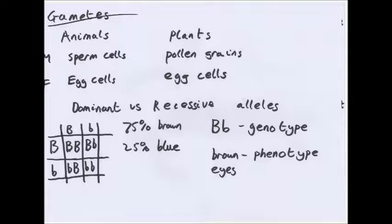That means even if both parents have brown eyes, they could produce a child with blue eyes — a 25% chance. The genotype is the alleles in an organism, for example capital B and small b. The phenotype is what the organism actually looks like — the actual feature shown. For example, the genes for hair colour make up the genotype, and the actual colour of the hair that you see is the phenotype.